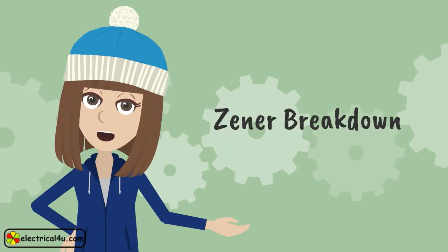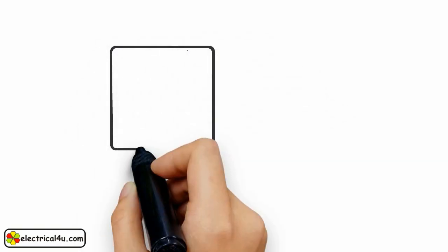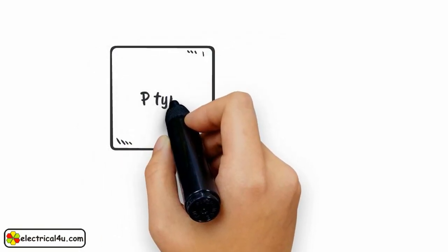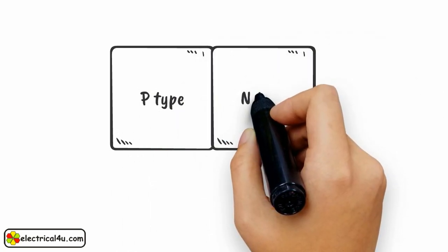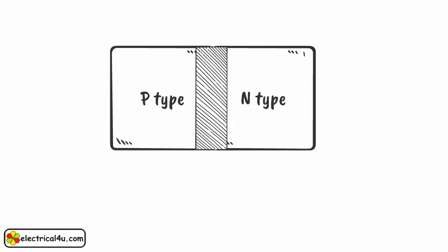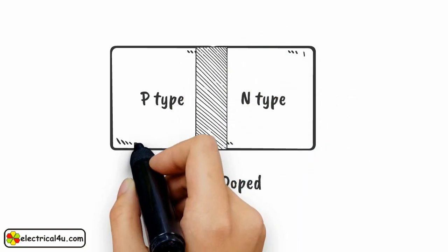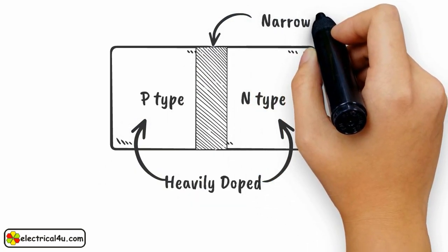Let us discuss Zener breakdown. Zener diode is a heavily doped PN junction diode where the depletion layer will be very narrow.